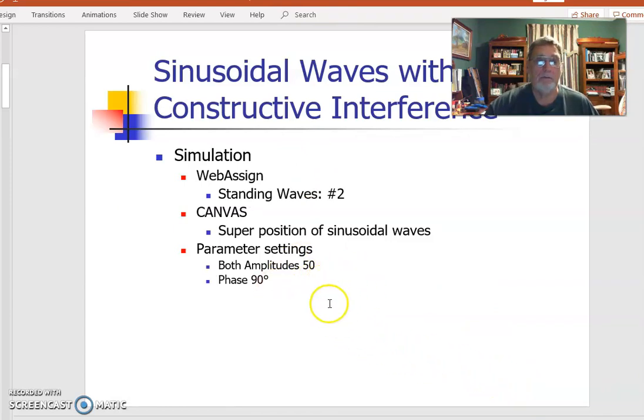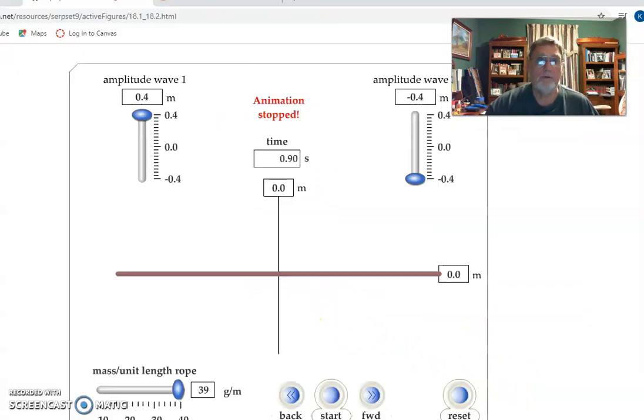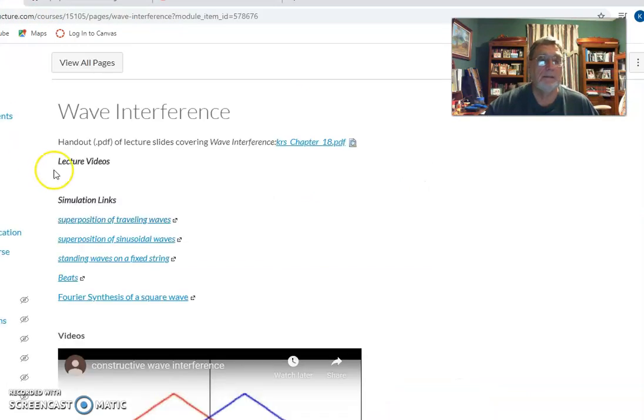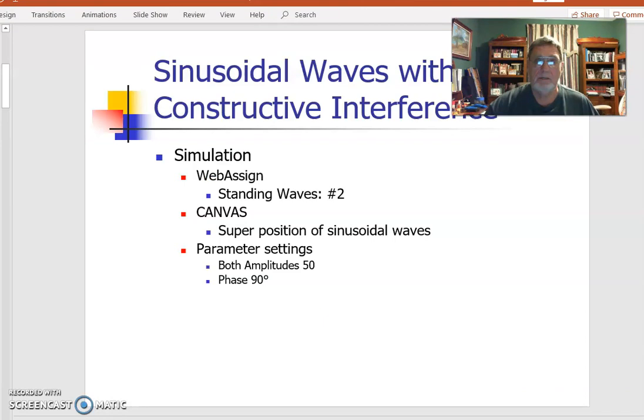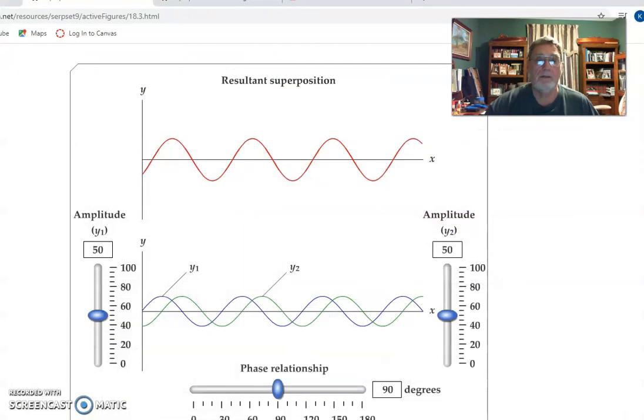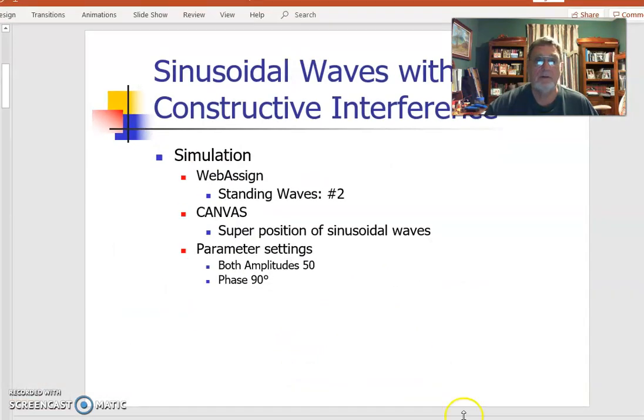Again, we've got that simulation. Let's run it. Let's have sinusoidal waves. And it's telling me to run it for 90 degrees. So here's the two. They're 90 degrees out of phase, and they add up nicely. Okay? And that's the sum of the two in your constructive interference.